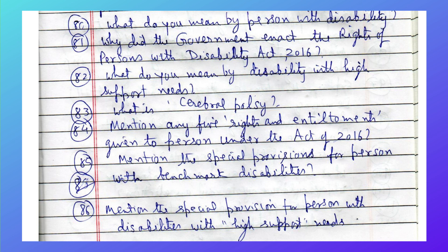What do you mean by disability with high support needs? What is cerebral palsy? Mention any five rights and entitlements given to persons under the Rights of Persons with Disabilities Act 2016. Mention the special provisions for persons with benchmark disabilities and the special provisions for persons with disabilities with high support needs.